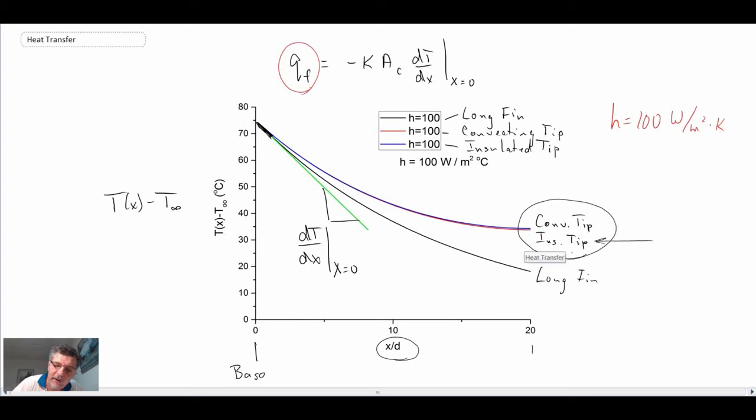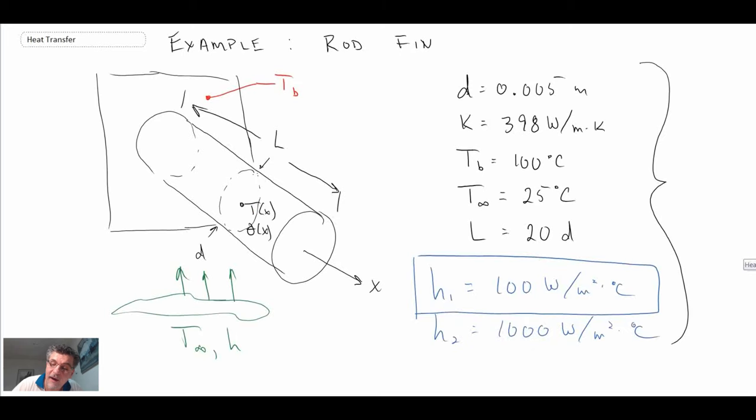We kind of come up with a shortcut correction technique that enables us to use the solution for the insulated tip, which was very simple, by just correcting the length of the fin itself. And that is a bit of a correction that will apply. And it's a bit of a shortcut for doing fin calculations. But that gives you an idea as to what the solutions look like for the case of a rod fin.